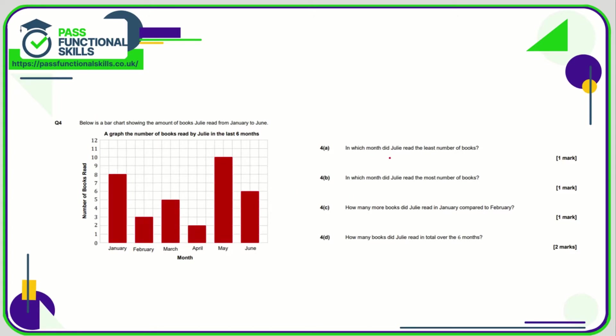Question number four. In which month did Julie read the least number of books? We're looking for the shortest bar, which is April. In which month did she read the most? That's the tallest one, May. How many more books did Julie read in January compared to February? January was eight, February was three, so eight take away three is five. Over the six months she read eight plus three plus five plus two plus ten plus six, which totals thirty-four books.